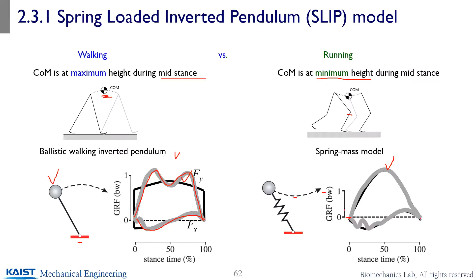And for the running, there's only a single hump, called U-shape vertical ground reaction force. And similar to the walking, there's a minus and followed by the plus directional horizontal, AP directional forces.